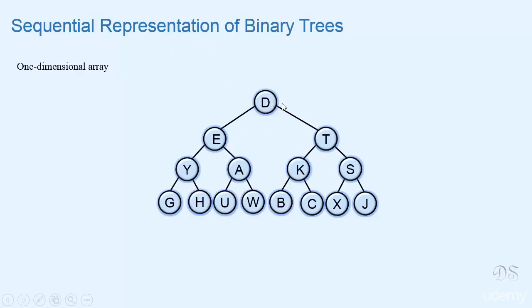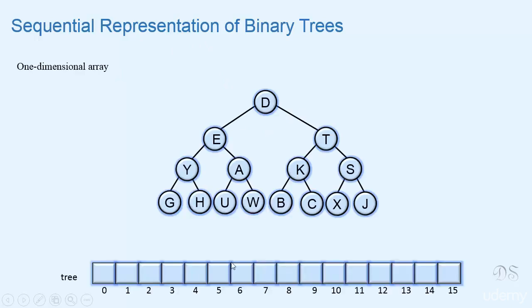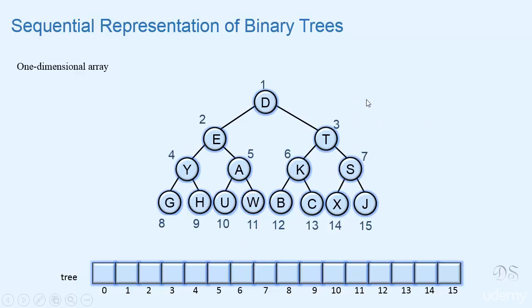Suppose we have to represent this binary tree using this one dimensional array. To decide the location of nodes in this array, we use a numbering scheme that we have studied in whole binary tree and complete binary tree. We number all the nodes starting from the root node. Now if a node is numbered k, then data for that node is stored at the kth index of this array.